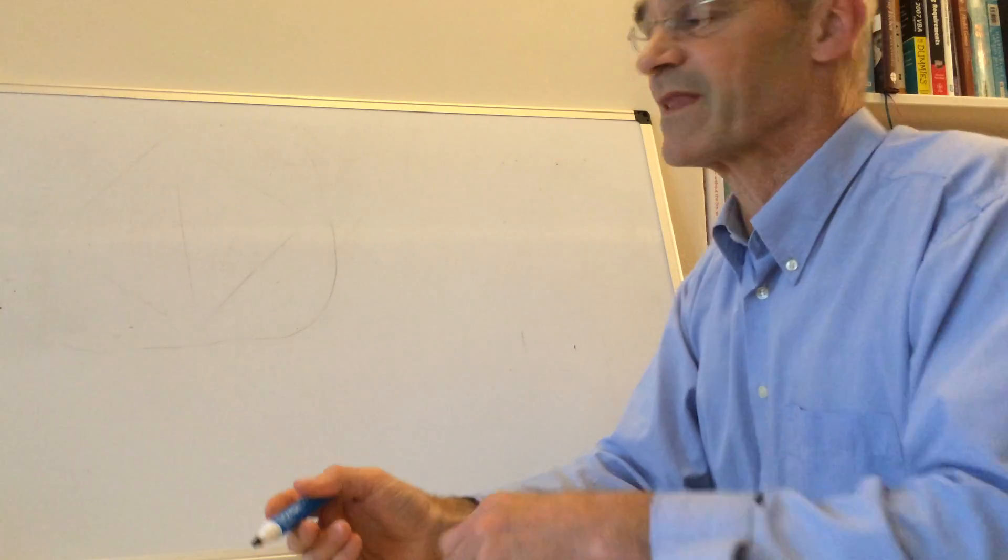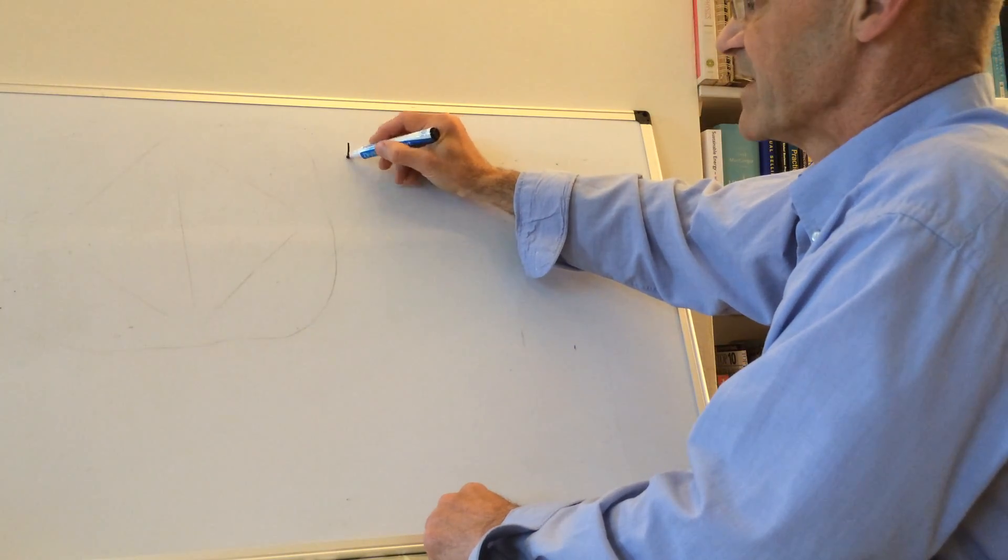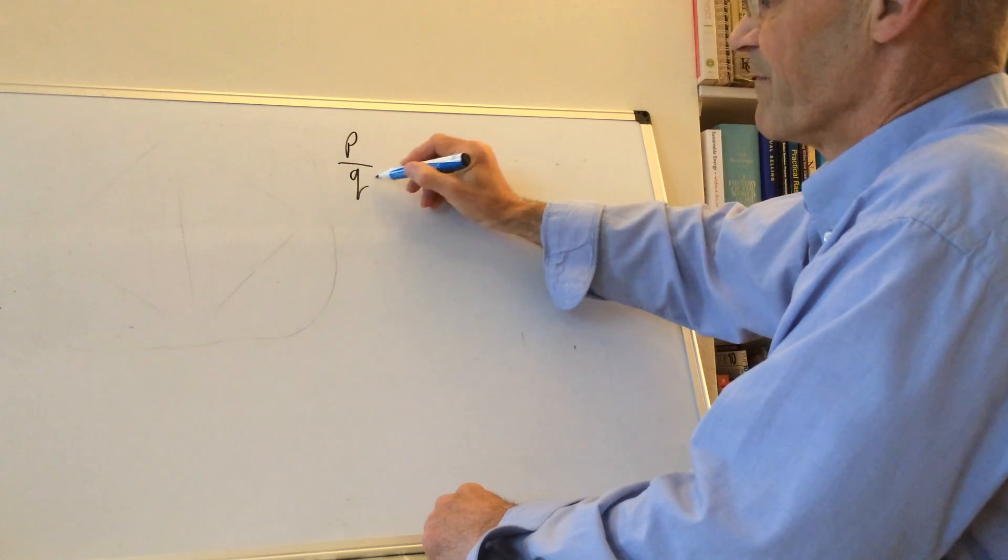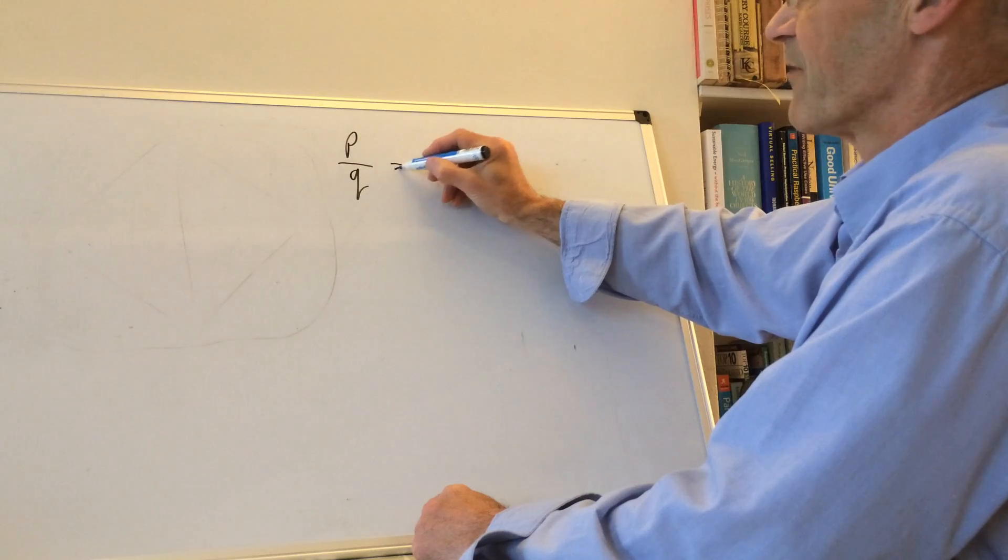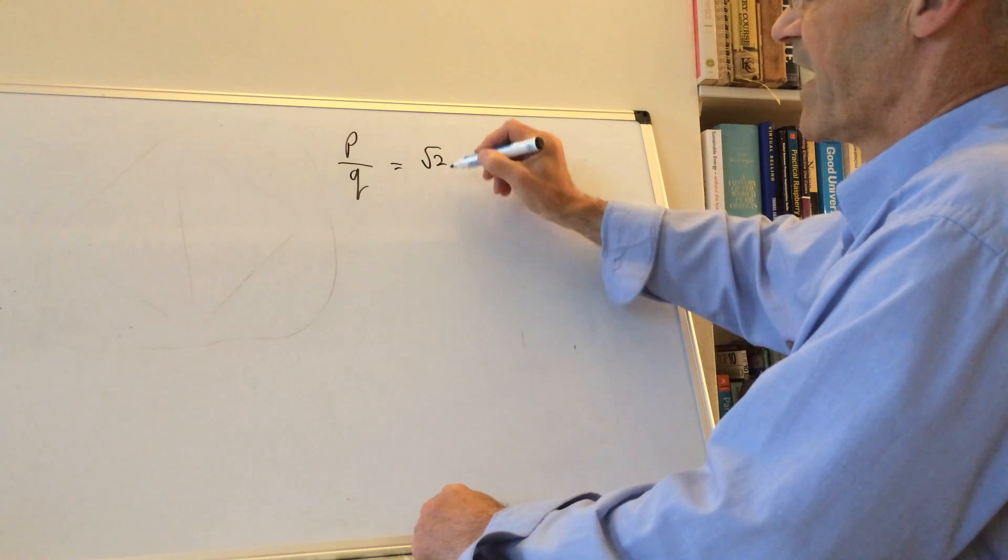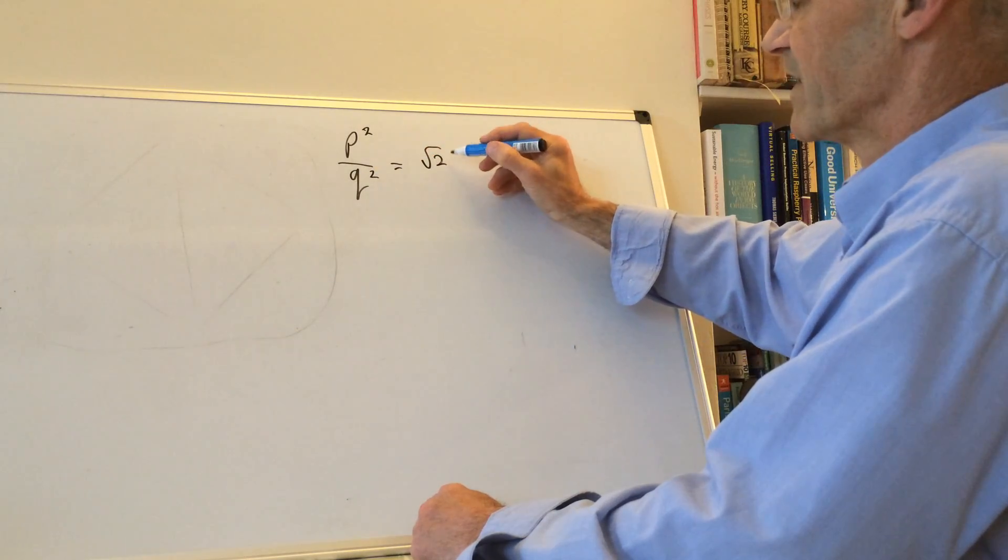Here's how the proof goes. So if we did have two numbers p and q, two whole numbers, two integers that were equal to √2, then it would be true that p²/q² would be equal to √2 squared, which is 2.